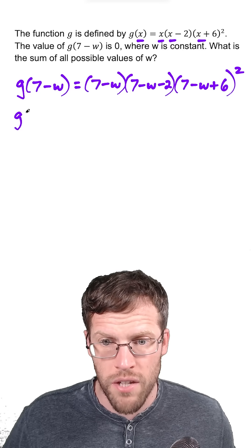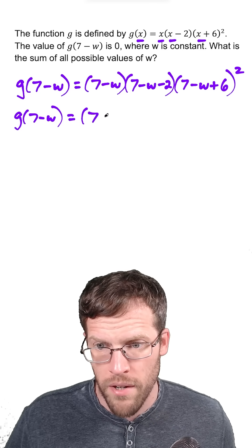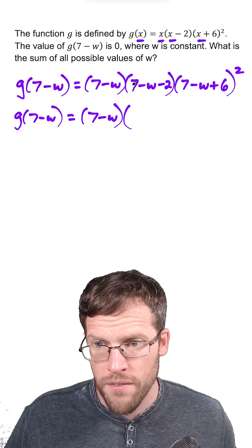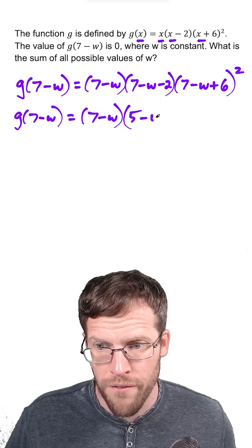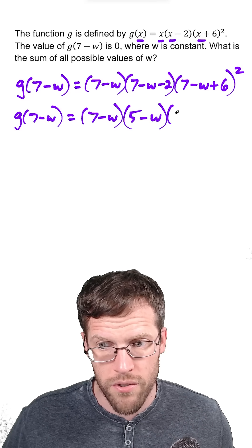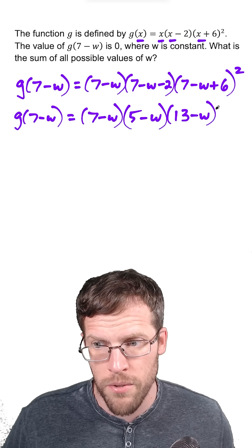So now we have g of 7 minus W. We could clean this up a bit. We have 7 minus W for the first factor. Then we have 7 minus 2 is 5, so we get 5 minus W. And then 7 plus 6 is 13, so we get 13 minus W squared.